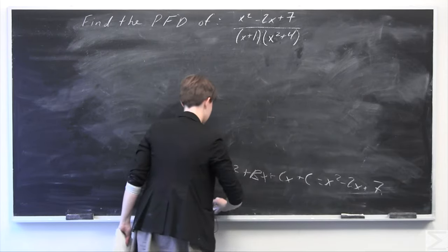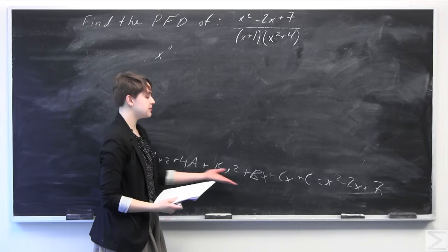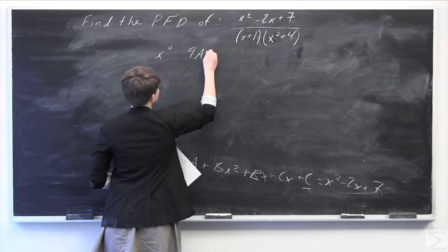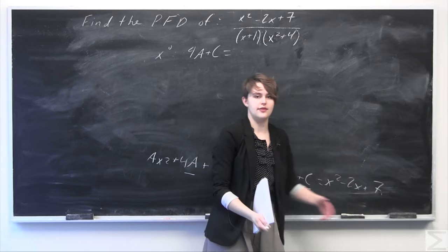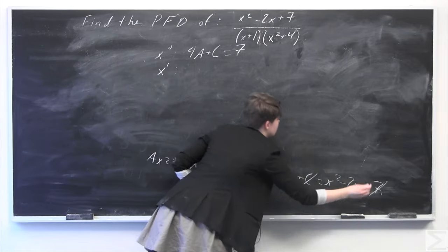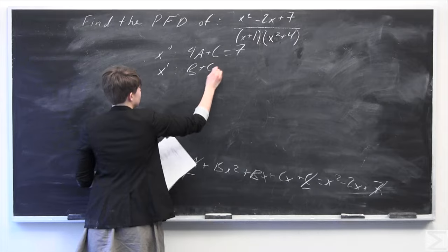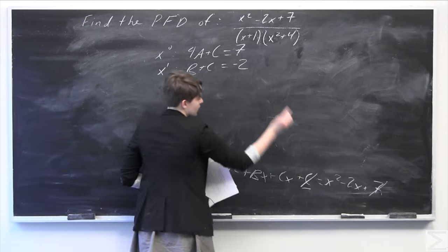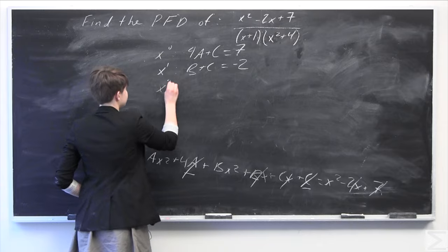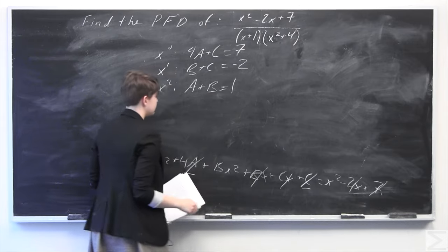Now combining coefficients by degree: for the x to the 0 terms, we have 4a and c, so 4a plus c is equal to 7. For the x to the 1 terms, we have bx plus cx, so b plus c is equal to negative 2. For the x squared terms, we have a plus b is equal to 1.